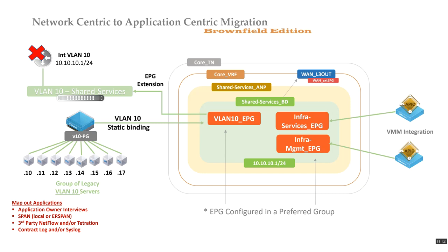With VMM integration, whether using the traditional VDS integration or the ACI Virtual Edge, what basically happens behind the scenes is that ACI instructs the hypervisor layer to create specific port groups and manages the VLAN-backed port groups that virtual machines consume as part of their virtual network interface cards.